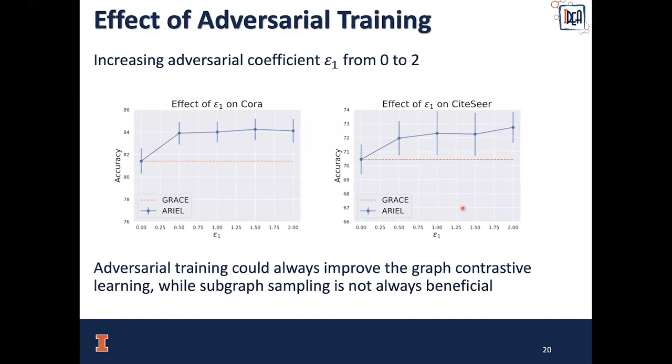We then ablate our method against the two components introduced in our framework. The first is adversarial training. We increase the adversarial coefficient epsilon_1 from zero to two. We can see here, although there are some variants, adversarial training could always help graph contrastive learning. For example, on Cora it achieves one percent improvement, and on CiteSeer it is about two percent improvement. When epsilon_1 equals zero, our method reduces to the basic version of GRACE. We conclude that adversarial training is the main source of improvement for our method. It's worth noting that subgraph sampling is not always beneficial. For example, on Cora it makes performance worse, but on CiteSeer it makes performance better.